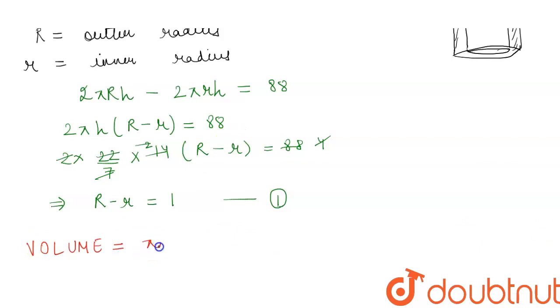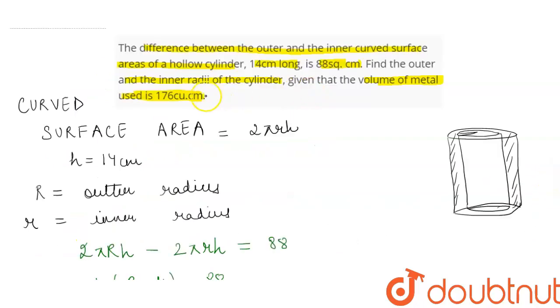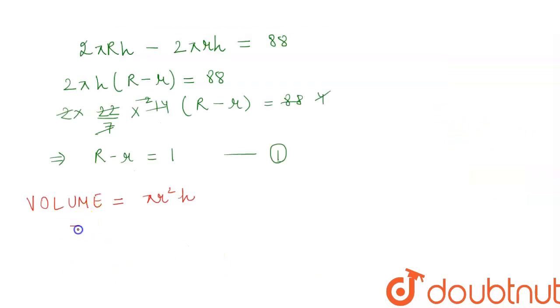Now the volume of the cylinder is given by πr²h. In the question we are given that the metal used volume is 176, which means that this region has volume 176. So we will have to subtract the volume of the inner cylinder from the outer: πR²h - πr²h = 176.